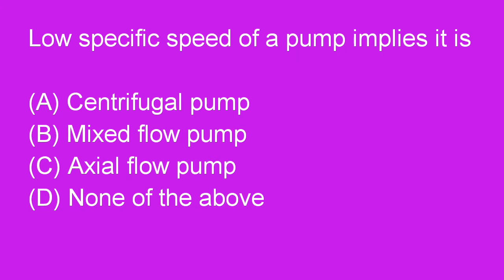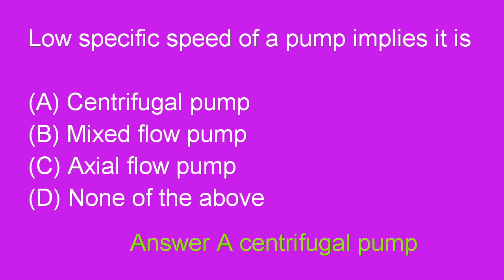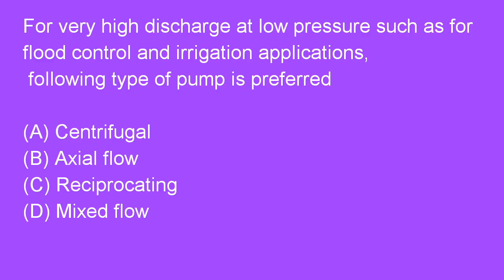Next question: Low specific speed of a pump implies it is a centrifugal pump. Answer A is right. Next question: For very high discharge at low pressure, such as for flood control and irrigation applications, axial flow pump is preferred. Answer B is right.